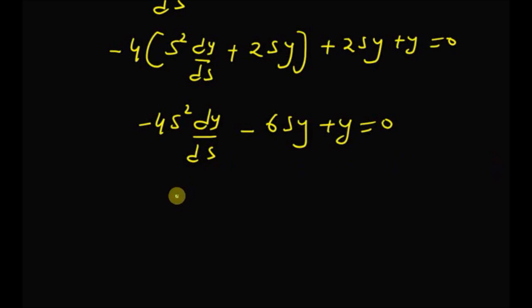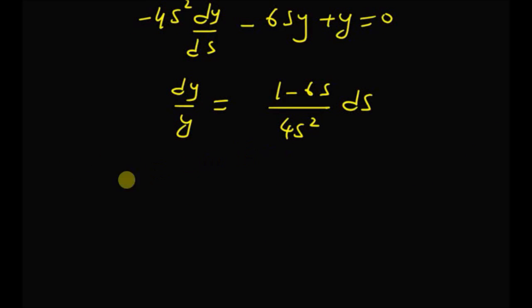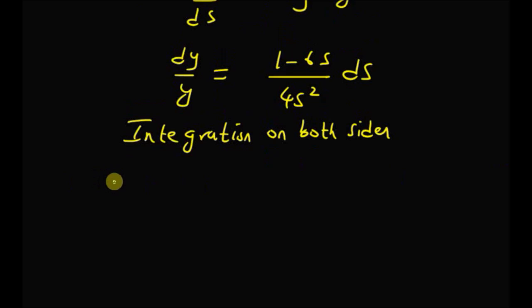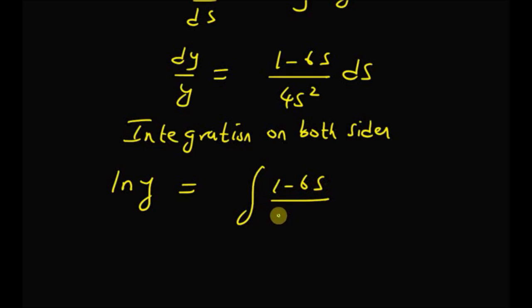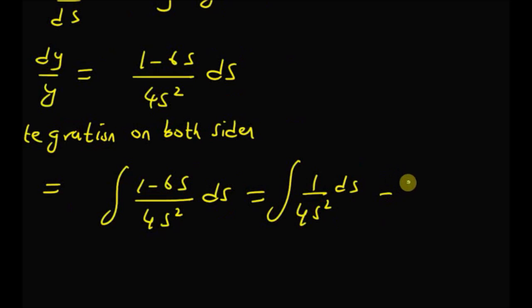Upon simple manipulations, this can be rewritten as dy/y = (1 − 6s)/(4s²) ds. By taking integration on both sides, we get: ln(y) = ∫(1/(4s²)) ds − (3/2)∫(1/s) ds, which equals −1/(4s) − (3/2)·ln(s) + constant k.